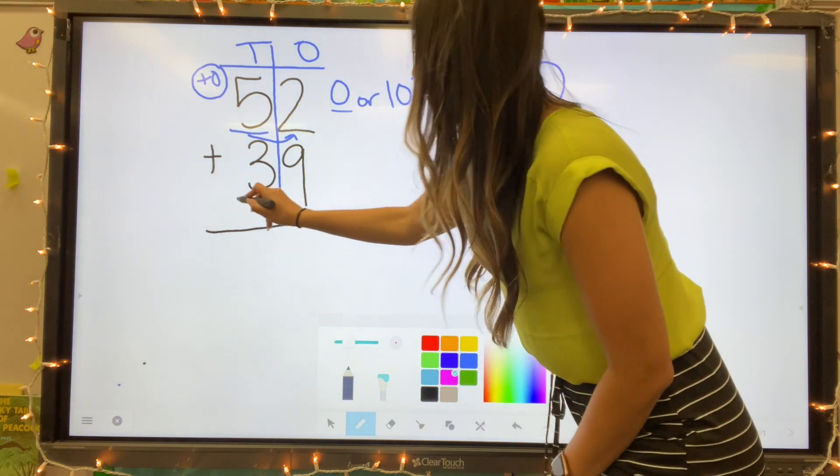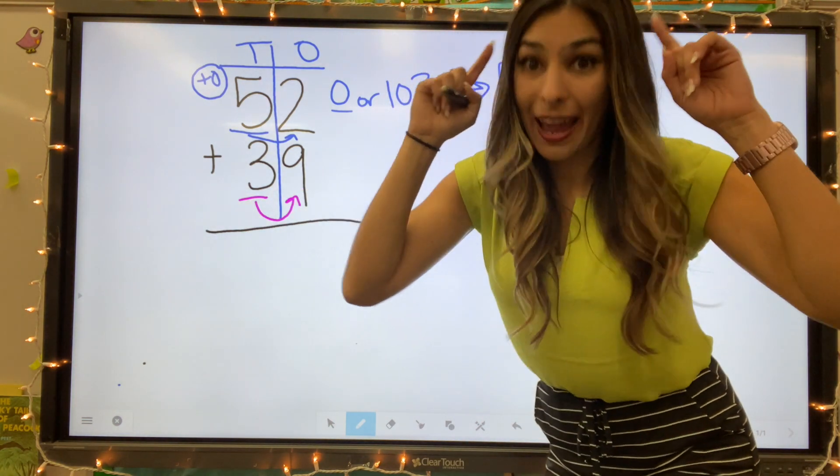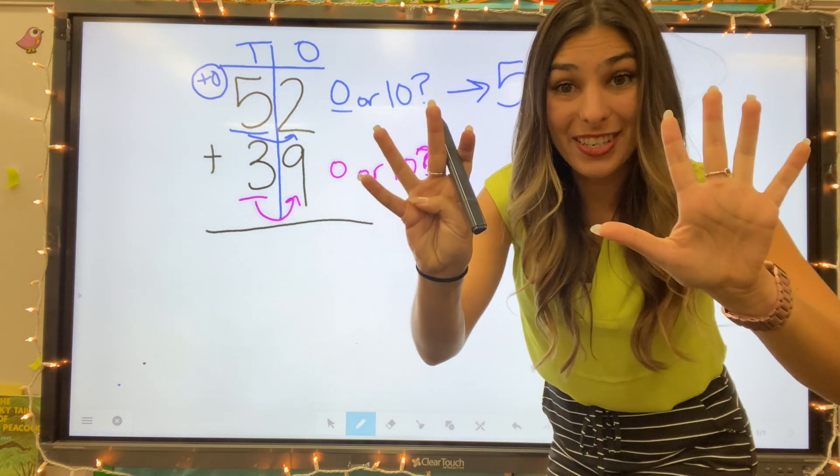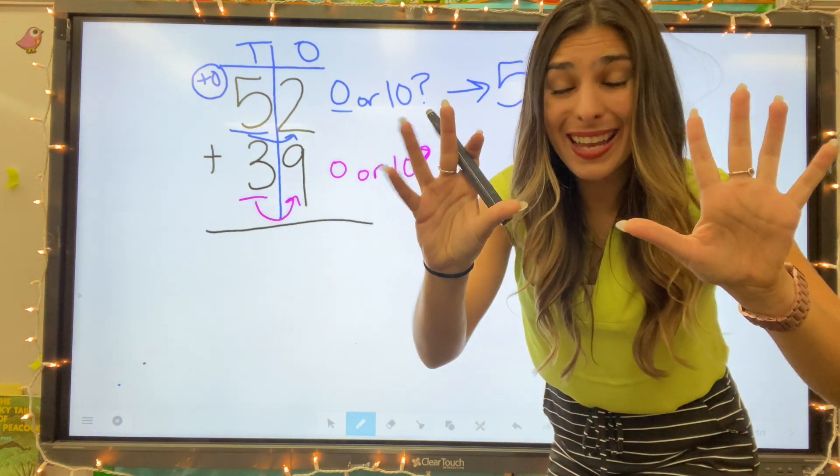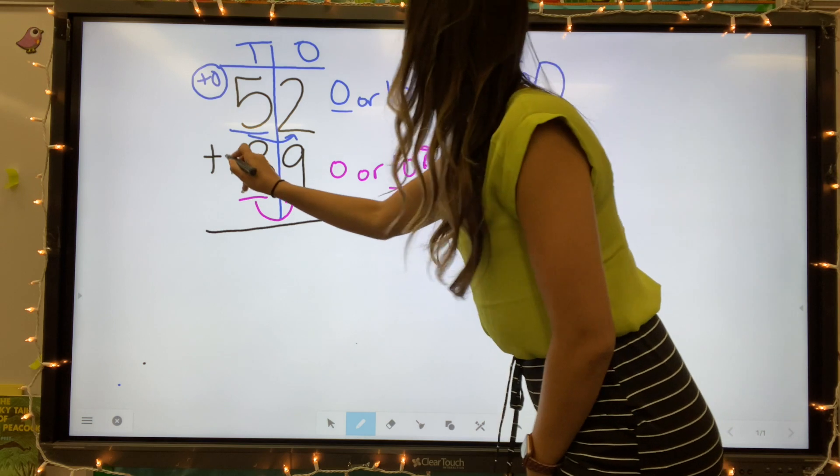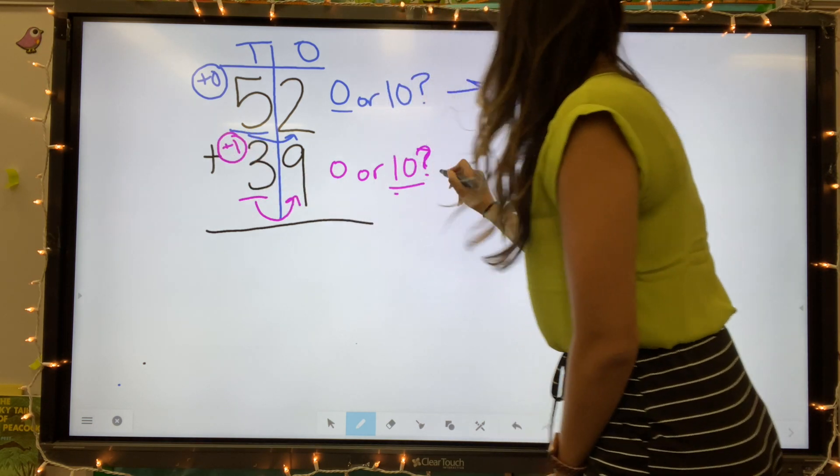Next number, we have 39. Three is my place. I'm looking at that nine and I'm going to ask myself, is that nine closer to zero or ten? Well, here's nine. Only one more to get to ten. It is way closer to ten. So we're going to add one. Three plus one equals four.